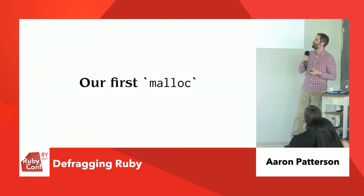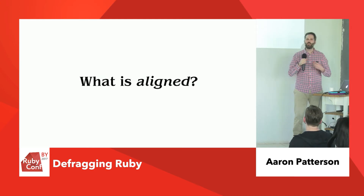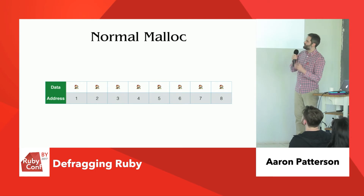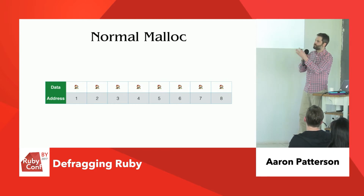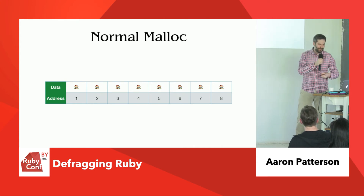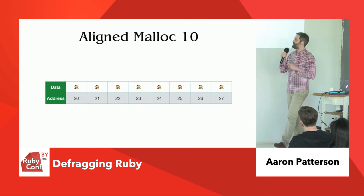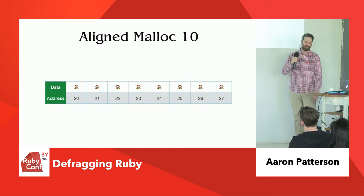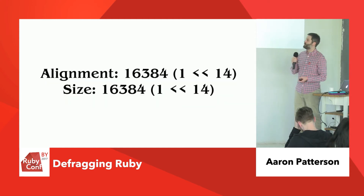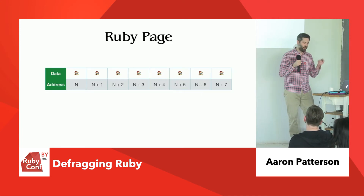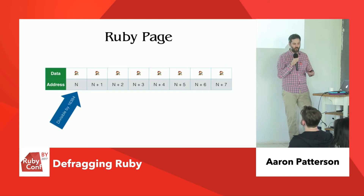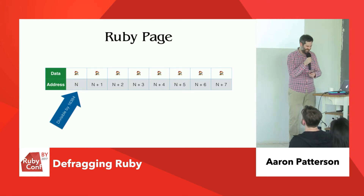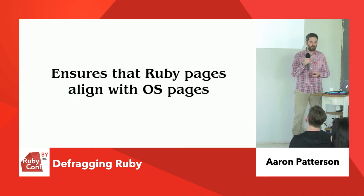What is aligned malloc? When we normally ask the operating system for memory, we get back a new area with some addresses, but unfortunately these addresses can start anywhere. An aligned malloc on, say, 10 means our addresses are going to be a multiple of 10. So we want an aligned malloc that's a multiple of 16,384. What happens is our page is aligned at 16,384, and the size is also 16,384, which means the first address is divisible by that number, but there are no addresses inside that space which are also a multiple of that number. This ensures that Ruby pages are aligned with OS pages.